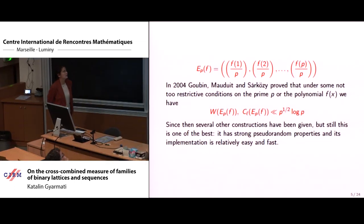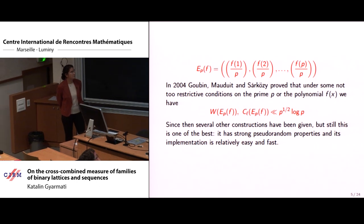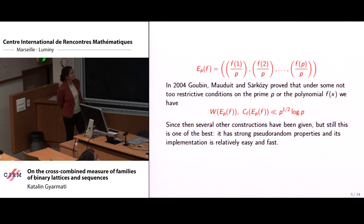In 2004, Goubin, Mauduit, and Sárközy proved that the well-distribution measure and the correlation measure are very small — smaller than the square root of p times log of p. This is almost optimal apart from the factor log of p. Since then several other constructions have been given, but this is still one of the best. It is very natural, has strong pseudorandom properties, and can be generated easily and fast.